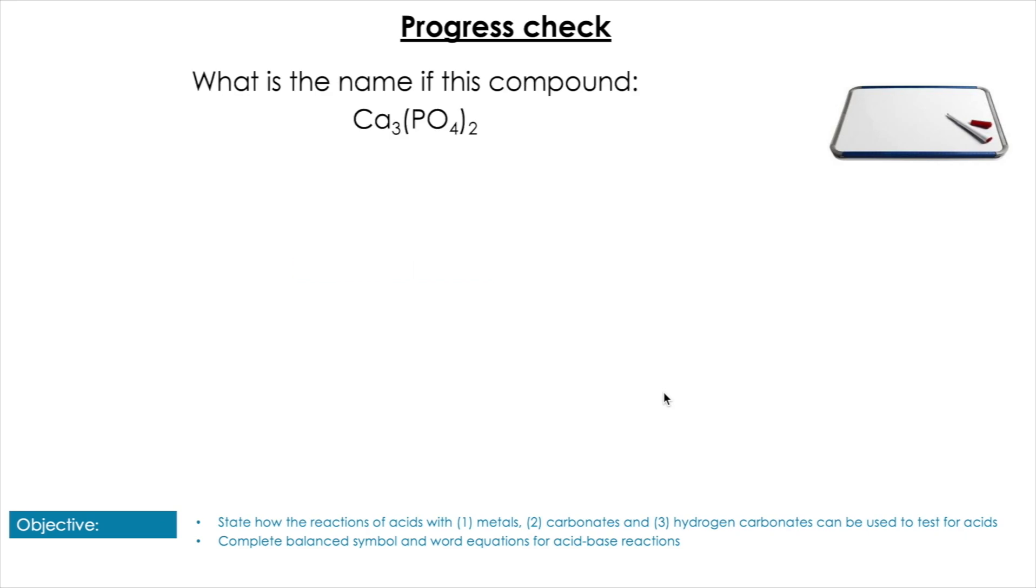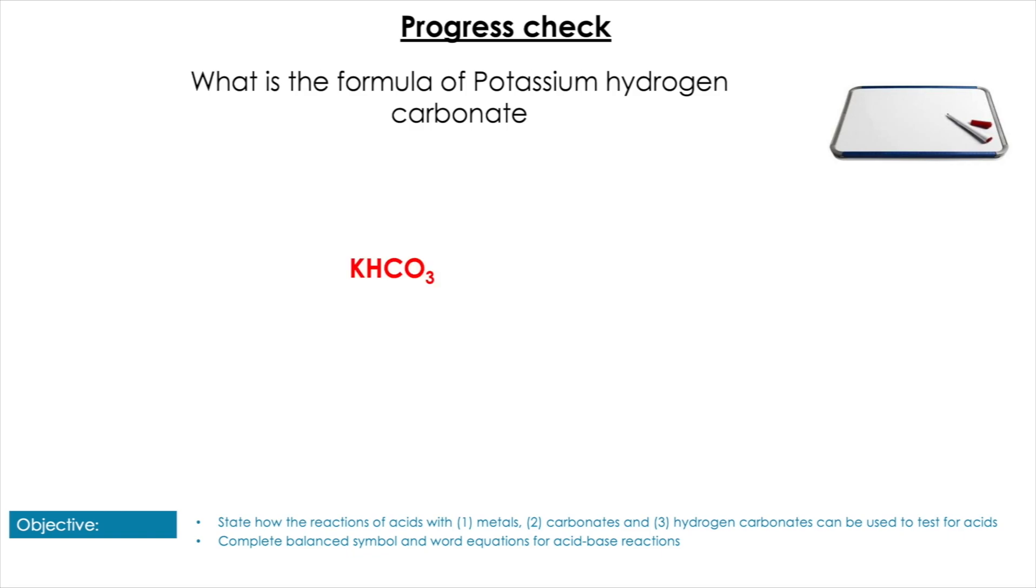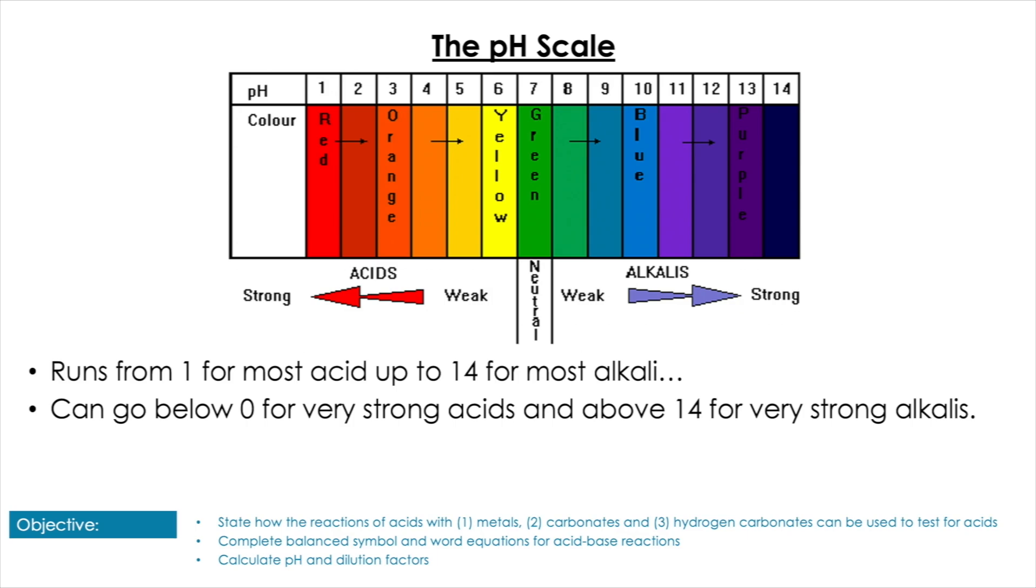Next, what is the name of this compound? Pause it here to give yourself some time. Pop them up, it is of course calcium phosphate. Last question then, what is the formula of potassium hydrogen carbonate? Pause it here to give yourself the time. Pop them up, it is of course KHCO3. Remember, HCO3- being the formula for the hydrogen carbonate ion.